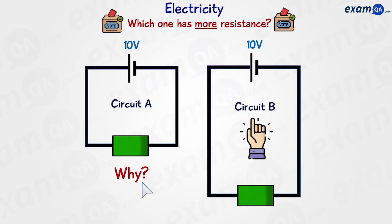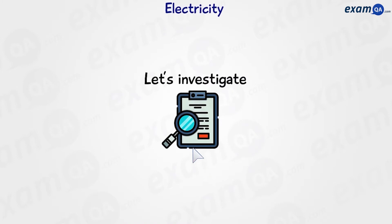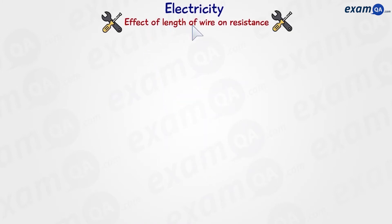Well, we can see that the only difference is that circuit B has a longer wire. So will this longer wire affect the overall resistance of the circuit? So we're going to investigate the effect of the length of wire on the resistance of the circuit.